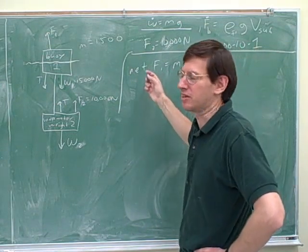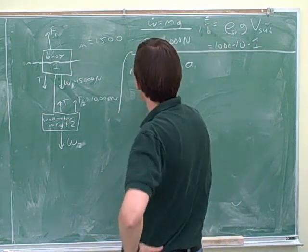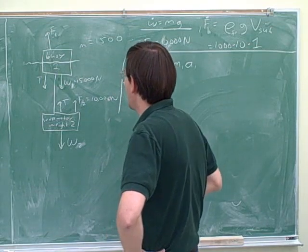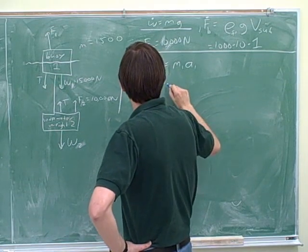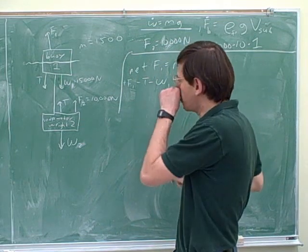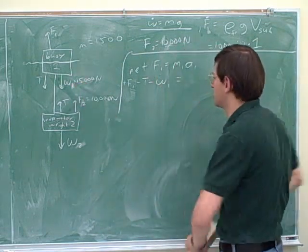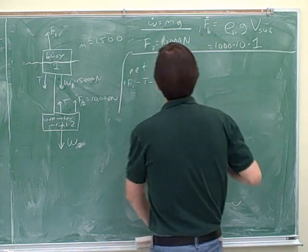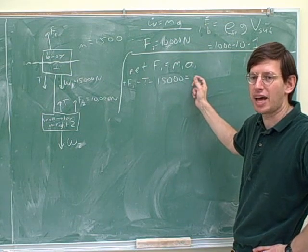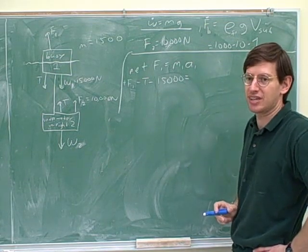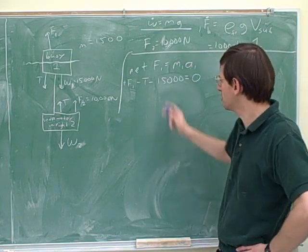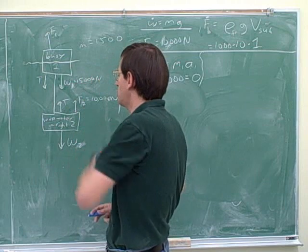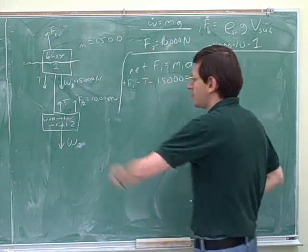What is the net force on object one? Well, there's its buoyant force in the positive direction, then the negative tension, then the negative weight. We already figured out this weight, which was 15,000 — and this is going to be negative because it's pointing down, so negative 15,000. How do we know the right-hand side is zero? They want it to float. If it's floating, it's motionless; if it's motionless, there's no acceleration. So the acceleration is zero. You saw that since there are two objects, you need two different net force equations — that's something a lot of people miss.